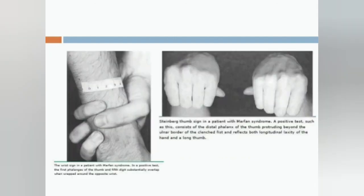The wrist sign is when you wrap your wrist and the thumb crosses the opposite little finger. The Steinberg thumb sign is when the thumb protrudes out from the fist — this occurs because Marfan syndrome patients have very long, arachnodactyly-like fingers. The wrist sign and thumb sign are very characteristic clinical findings in Marfan syndrome.